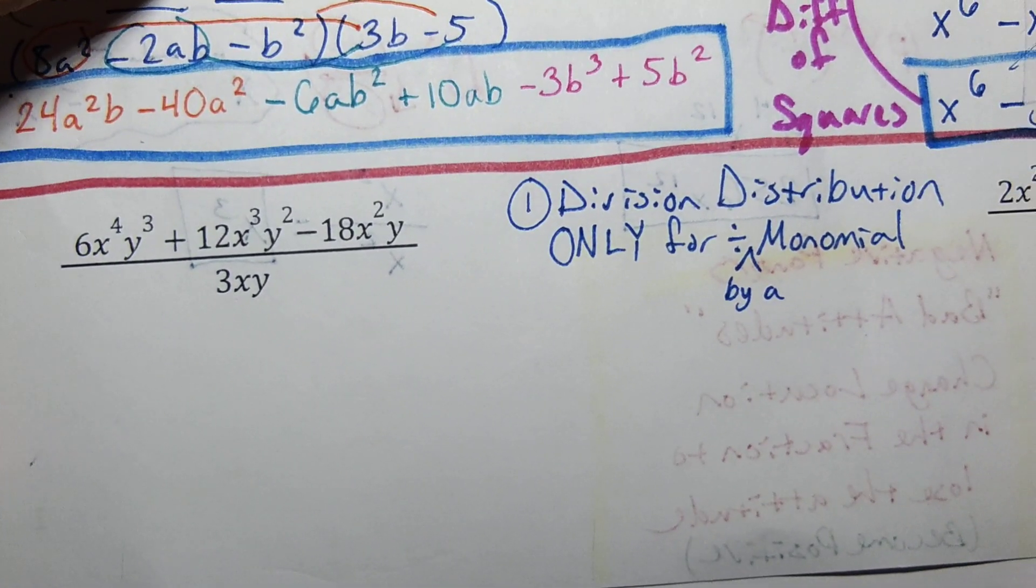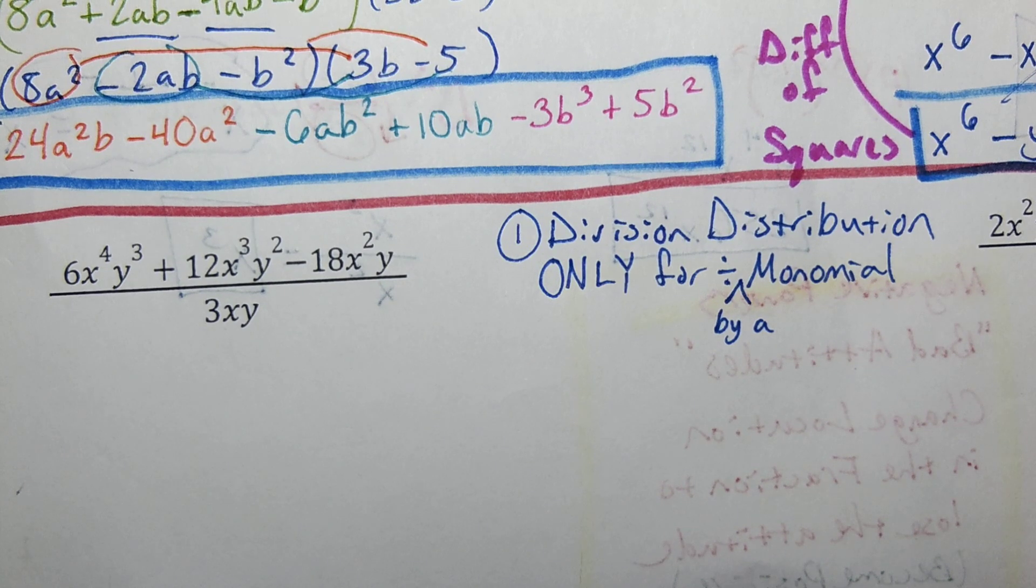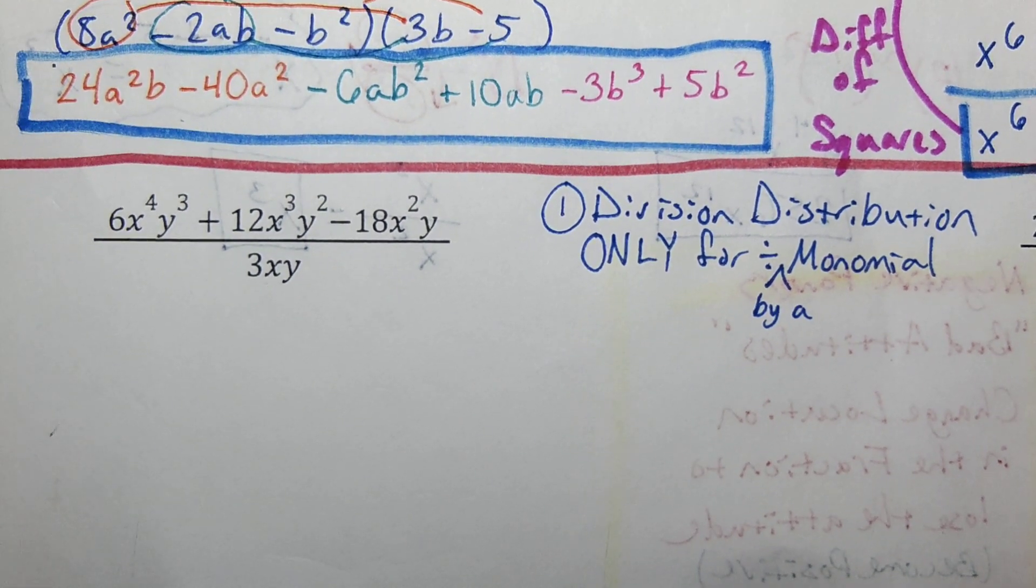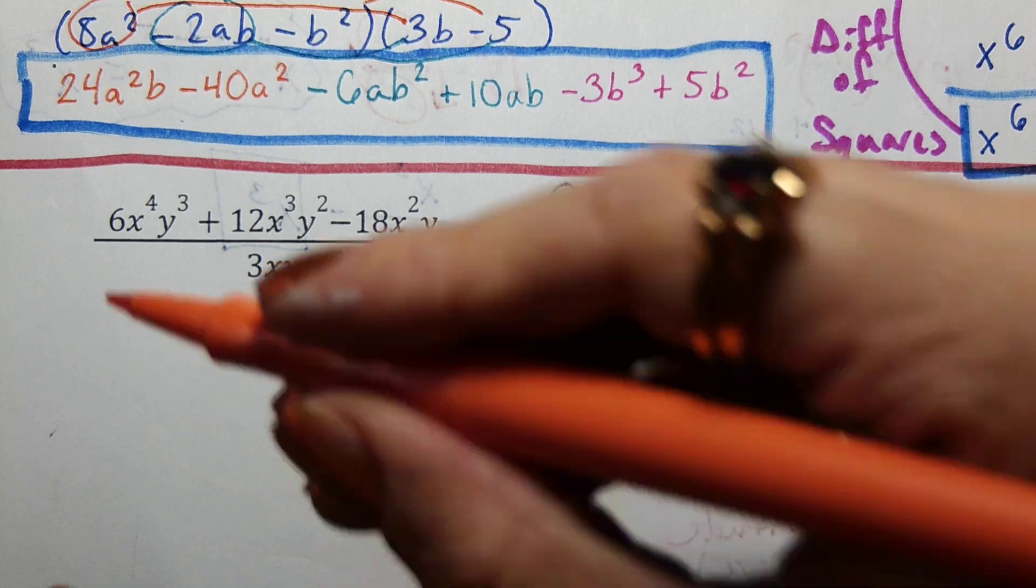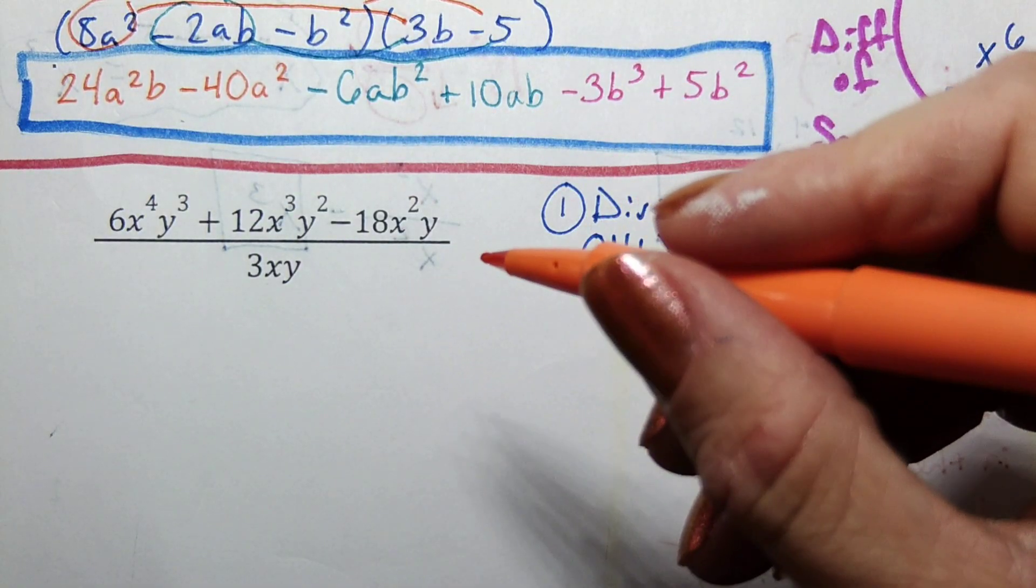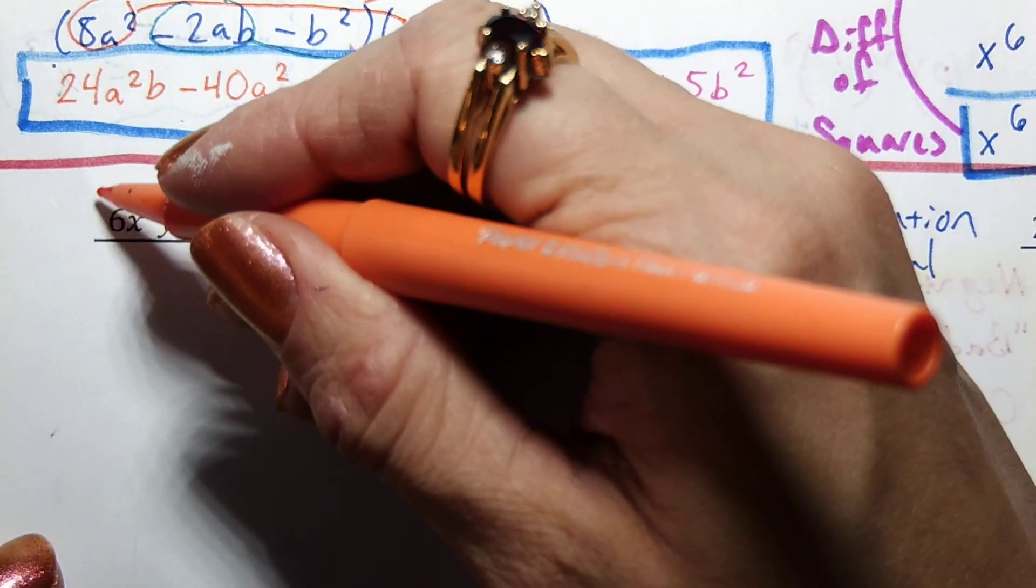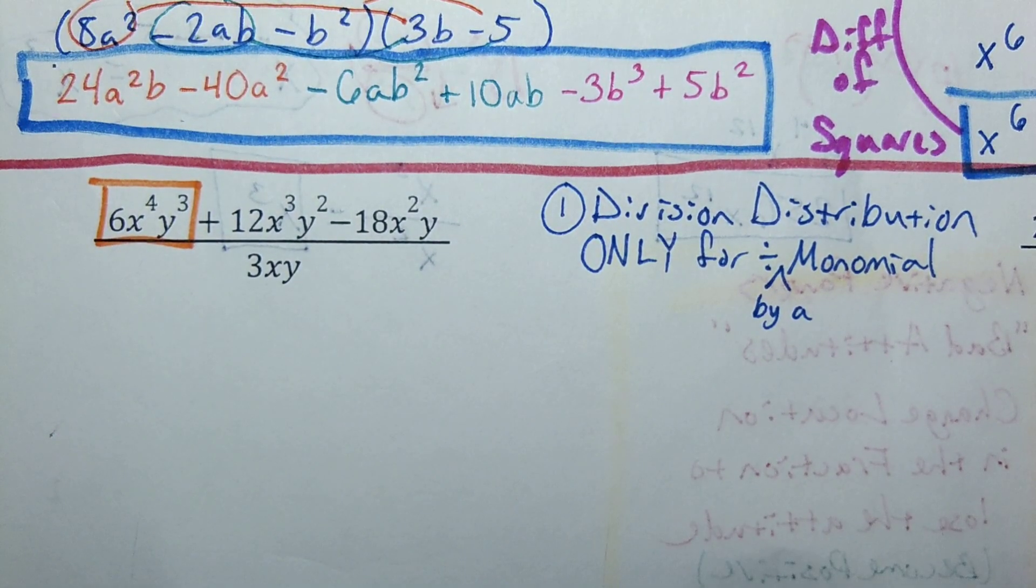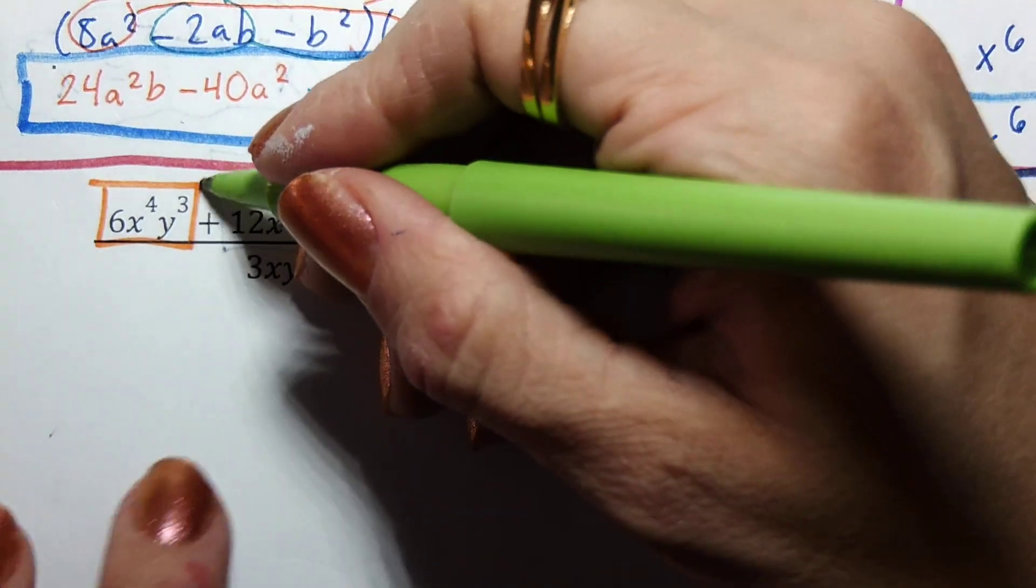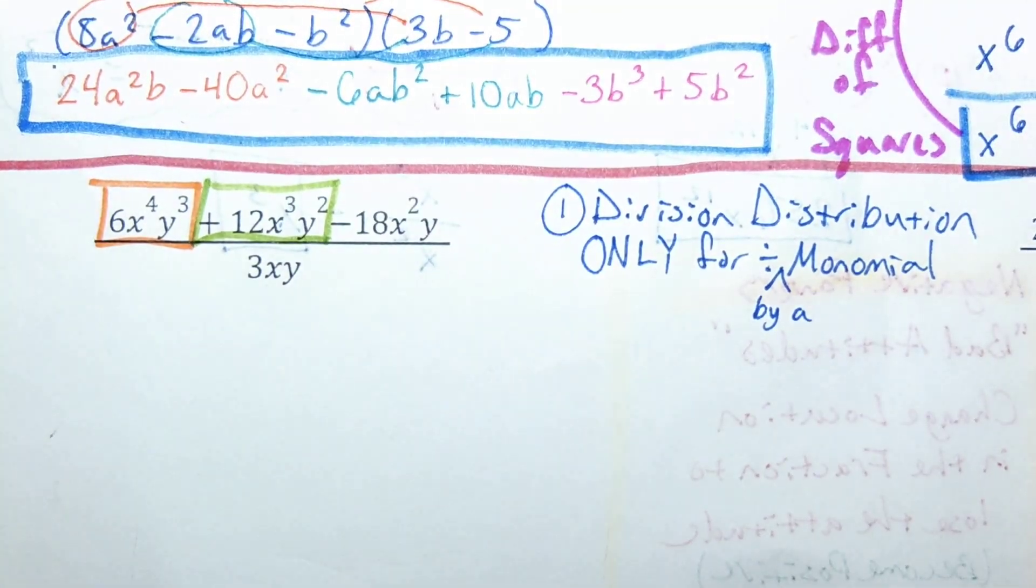So division distribution only for dividing by a monomial - monomial, one thing, one chunk. So how many chunks do I have on the top? What, one and two, and three.